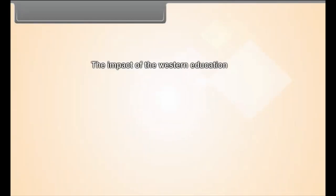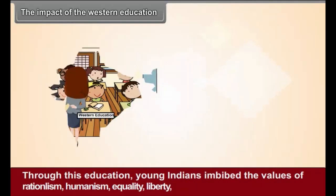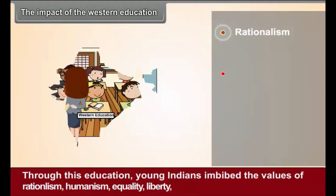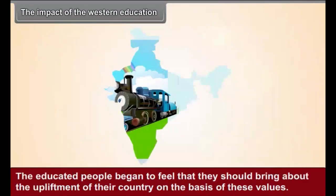The Impact of Western Education: The British introduced Western education in India. Through this education, young Indians imbibed the values of rationalism, humanism, equality, liberty, a scientific outlook, democracy, and nationalism. The educated people began to feel that they should bring about the upliftment of their country on the basis of these values. Thus, Western education lent a modern outlook to the national sentiment of the Indians.